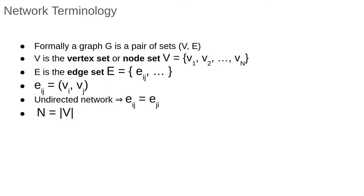For a mathematician, a graph G is a pair of sets, V and E. V is a vertex or node set, V1, V2, all the way up to VN, where the Vi are simply labels. E is the edge set, consisting of the edges Ei,j, which connect vertices i and j. An edge is simply a pair of vertices, Vi, Vj.